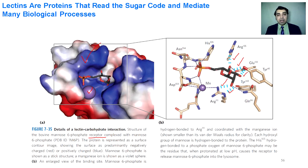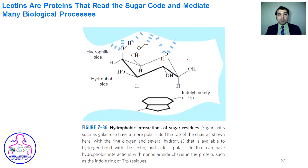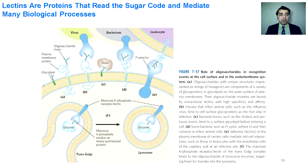Proteins have specific interactions with oligosaccharides and monosaccharides. In one example, lactose binds to the surface of a lectin. Mannose has a polar area above its chair that makes hydrogen bonds with the lectin, while the bottom of its chair is hydrophobic, making hydrophobic interactions with the indole moiety of tryptophan. The cell surface contains glycolipids embedded in the outer cell membrane and oligosaccharide chains bound to plasma membrane proteins that can interact with viral cell surfaces.